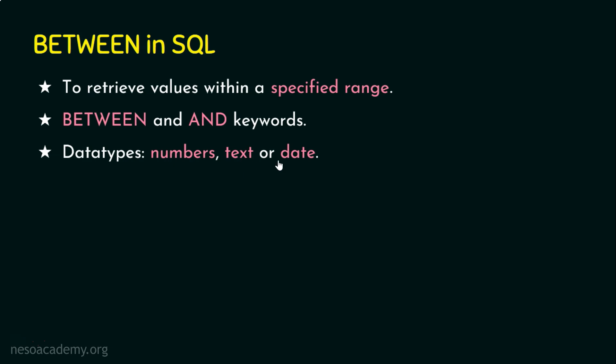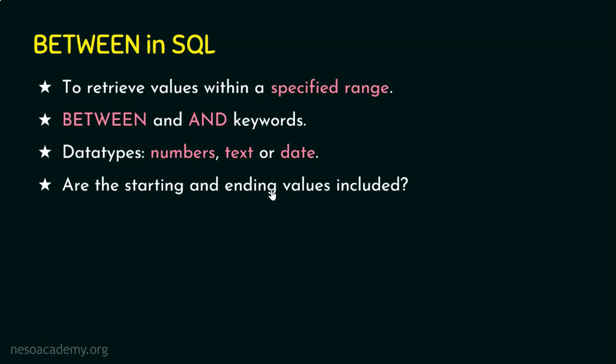Will this keyword BETWEEN work on all data types? Yes — BETWEEN works on number type, text type, or even date type. That's the beauty of this keyword. It takes the first value and the last value in the range. For example, BETWEEN 50 AND 70 — are 50 and 70 included? Yes, the starting and the ending values are included. So BETWEEN 50 AND 70 includes 50 and 70 as well in the result.